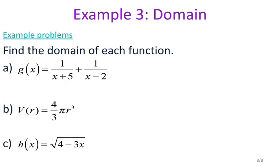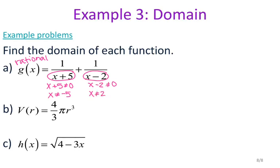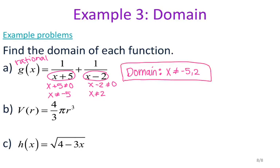Let's find the domain of each function. Letter a is a rational expression — for rational expressions you can never divide by 0, so these two denominators can never be 0. I'll say x plus 5 cannot equal 0 and x minus 2 cannot equal 0, and solving both equations gives x cannot be negative 5 and x cannot be positive 2. So the domain is all x except x equals negative 5 or x equals 2, because those would result in zeros in the denominator.